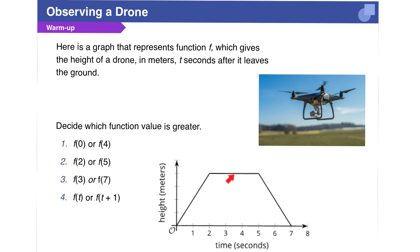Here we have a graph that is showing the height of a drone off the ground at certain times. And we are looking at function notation, deciding which function value is greater. So in number 1, f of 0 is referring to the function at time 0, and f of 4 is referring to where the function is at 4 seconds.